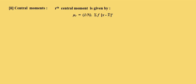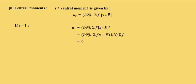The value of the rth central moment is given by 1 by n summation f times x minus x bar, whole power r. By putting r equal to 1, 2, 3, and 4 we get the first, second, third, and fourth central moments. Putting r equal to 1, mu 1 equals 1 by n summation f times x minus x bar power 1. Expanding, we get x bar minus x bar, which equals 0. So the first central moment is always equal to 0.